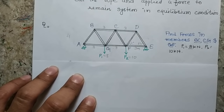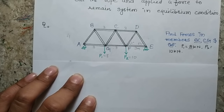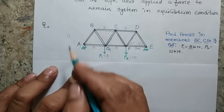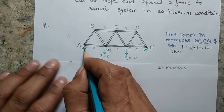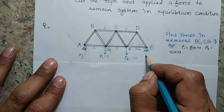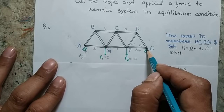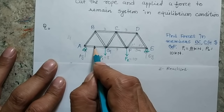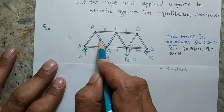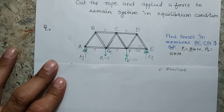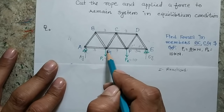Let me explain why we apply the method of section rather than the method of joint here. In the method of joint, we first calculate the reactions, then start from joint A or E and calculate two unknowns at a time, moving joint by joint. We would need to consider a minimum of three joints to calculate the forces in members BC, CG, and GF.